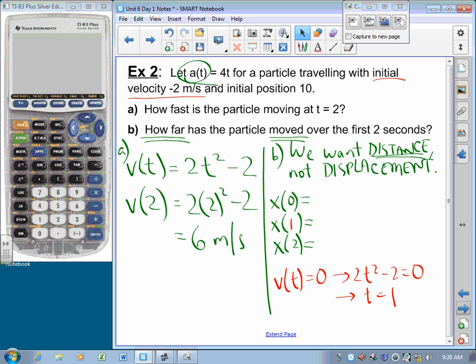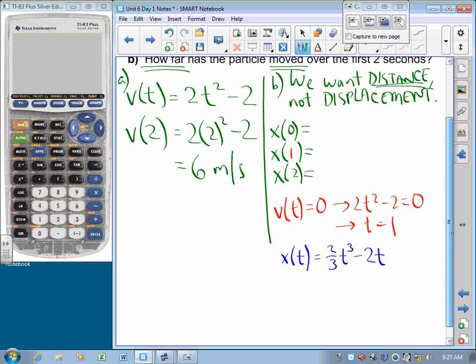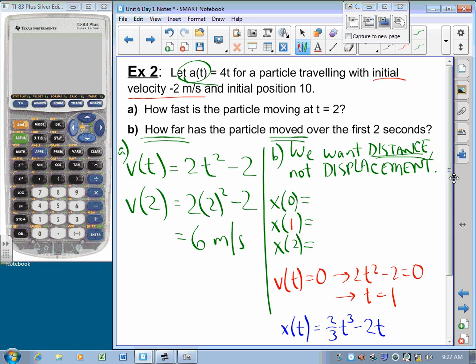It still doesn't help me because I still don't have an x function. And that's okay because I'm just going to integrate velocity. And if I integrate velocity, I've got the integral of 2t squared, that's 2 thirds t cubed, minus 2t, plus some number so that the initial position is 10. So, what would that number be? 10.